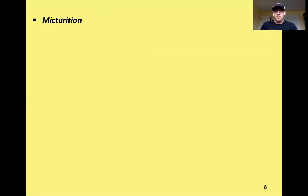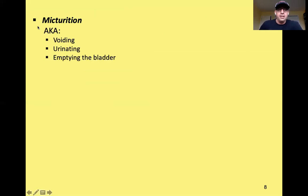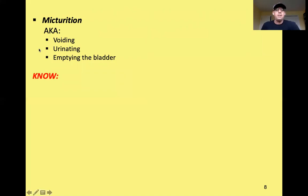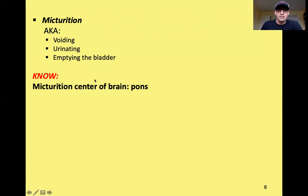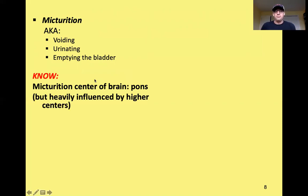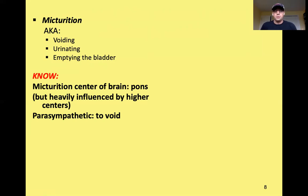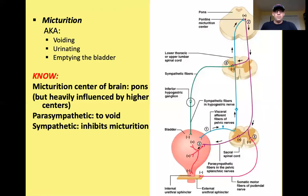Micturition is the physiological term for urinating or voiding. The control center for micturition in the brain is located in the pons, though it is heavily influenced by other higher brain centers. The parasympathetic division of the autonomic nervous system controls voiding, whereas the sympathetic division inhibits micturition.